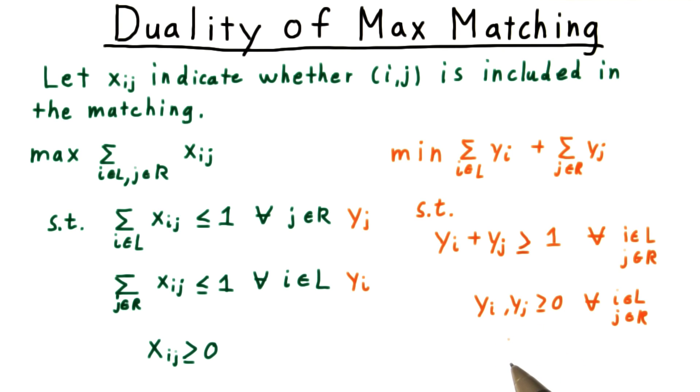The interpretation here is straightforward. Vertex i is in the cover if and only if yi is 1. And similarly, vertex j is in the cover if and only if yj is 1. Every edge must have at least one vertex in the cover, and we're trying to minimize the size of the cover.